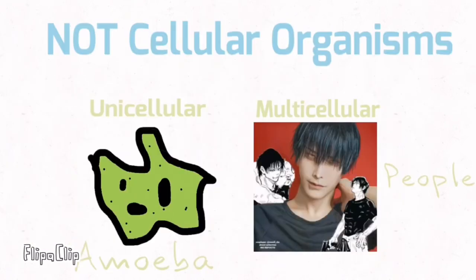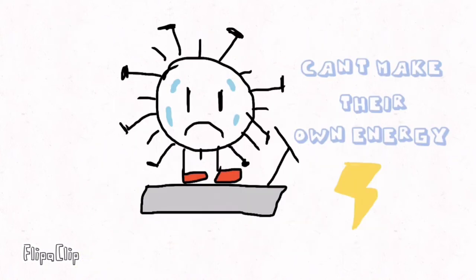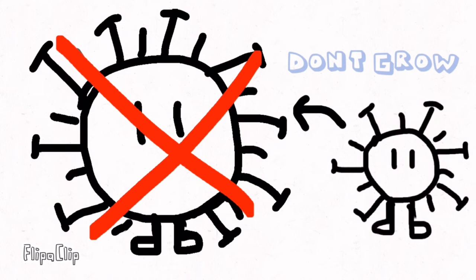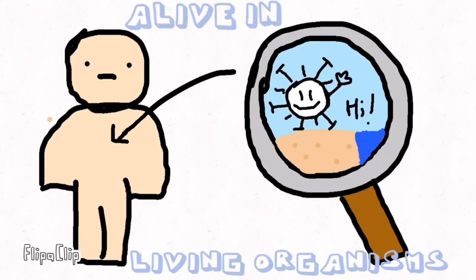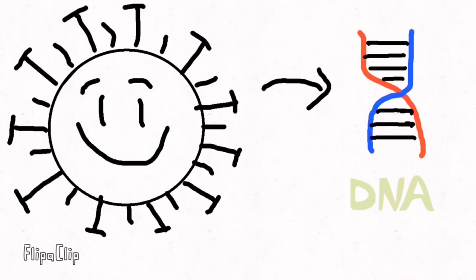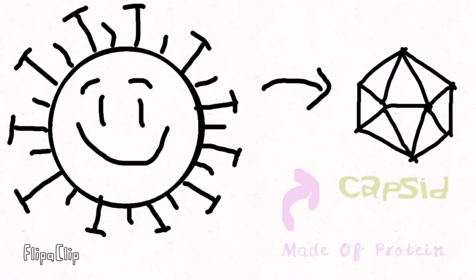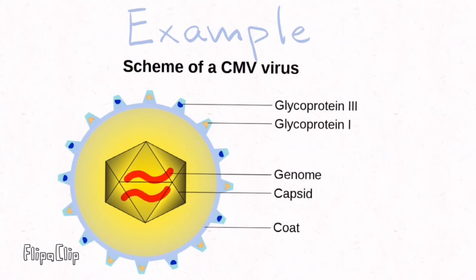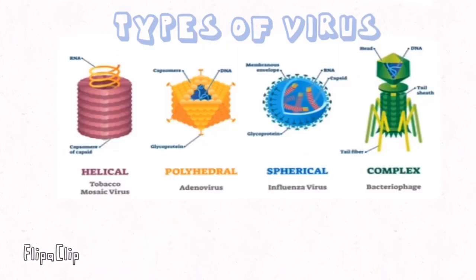Cellular organisms are either unicellular like amoeba or multicellular like people. They can't make their own energy nor grow. They are alive in only living organisms and exist to make more viruses by multiplying. They are made out of DNA and capsids. Capsids are also made out of protein. Here's an example of a virus. There are four types of virus: helical, polyhedral, spherical and complex. The dates are when the viruses were discovered.